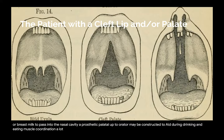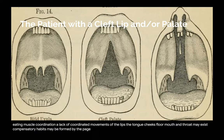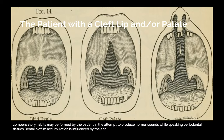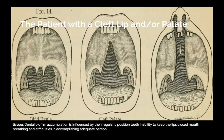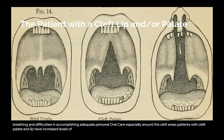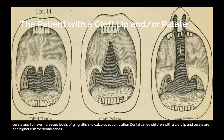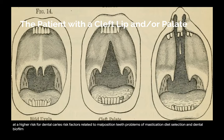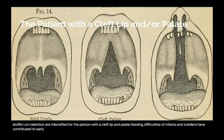Muscle coordination: a lack of coordinated movements of the lips, tongue, cheeks, floor of mouth, and throat may exist. Compensatory habits may be formed by the patient in the attempt to produce normal sounds while speaking. Periodontal tissues: dental biofilm accumulation is influenced by irregularly positioned teeth, inability to keep the lips closed, mouth breathing, and difficulties in accomplishing adequate personal oral care, especially around the cleft areas. Patients with cleft palate and lip have increased levels of gingivitis and calculus accumulation. Dental caries: children with a cleft lip and/or palate are at higher risk. Risk factors relating to tooth position, problems of mastication, diet selection, and dental biofilm retention are intensified. Feeding difficulties of infants and toddlers have contributed to early childhood caries, also known as ECC.